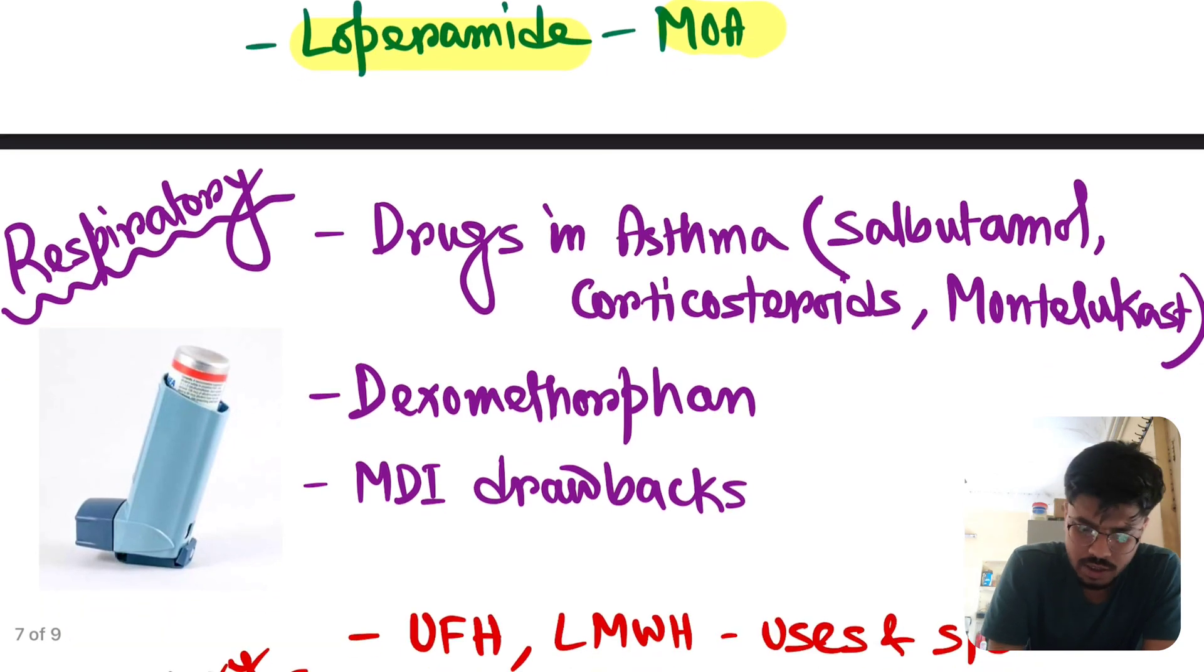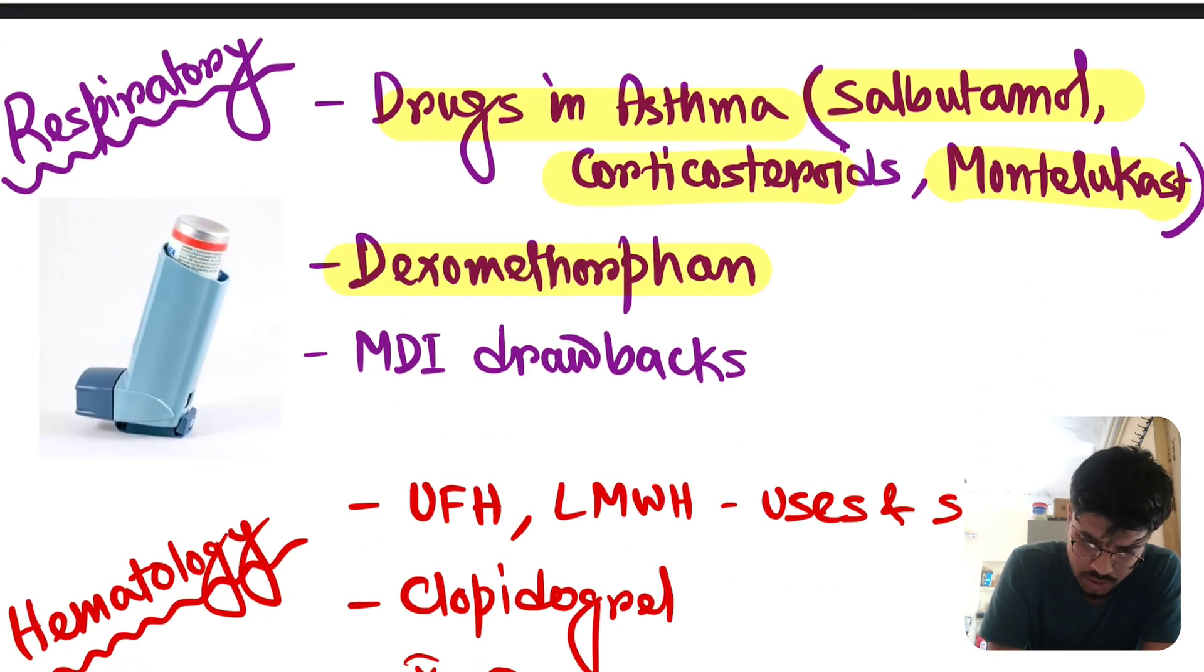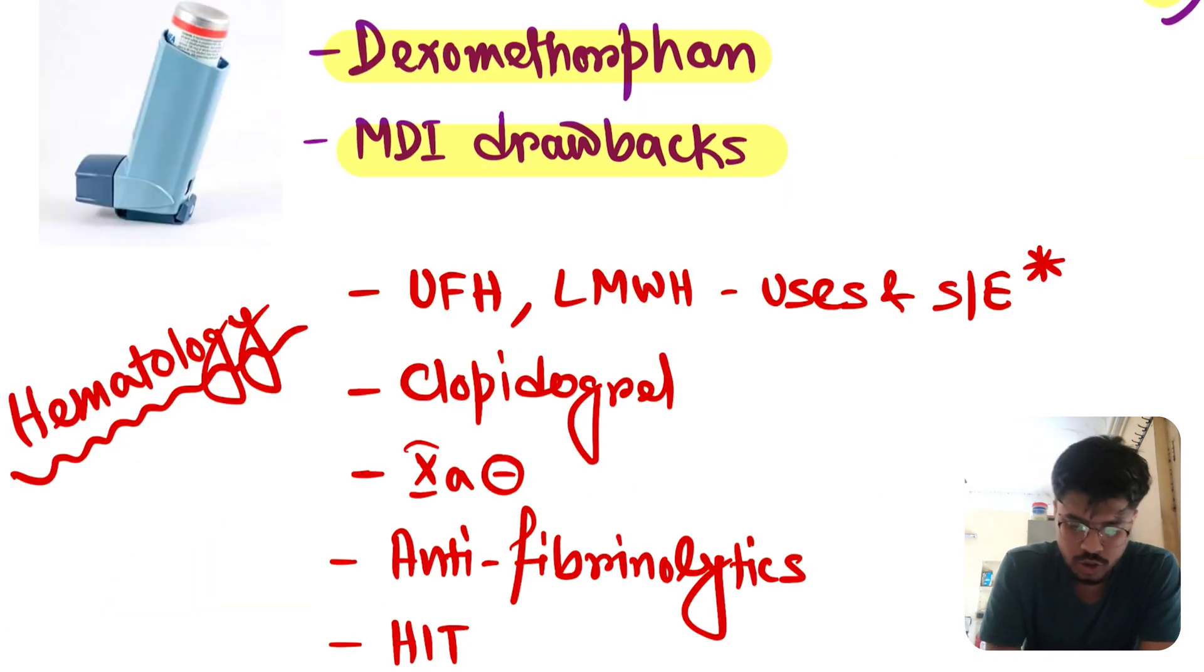In respiratory, drugs in asthma. Very important. Specially salbutamol, corticosteroid, montelukast. Mechanism of action and side effects. Dextromethorphan. MDI drawbacks. Already asked topics. So you have to carefully read about this.